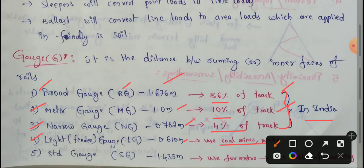This is the light gauge. Next, the standard gauge. The standard gauge is 1.435 meters — the distance between the two rails. If we use the metro, we use the standard gauge. More than 60% of countries use the standard gauge.